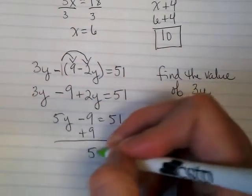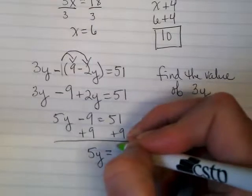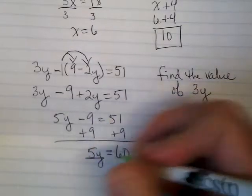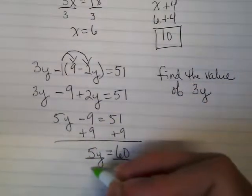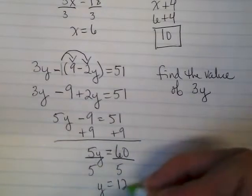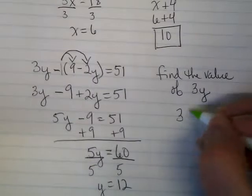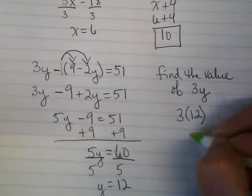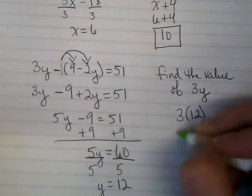I have 5y equals 60. Divide by 5. Y equals 12. So 3y is going to be 36.